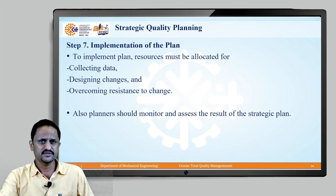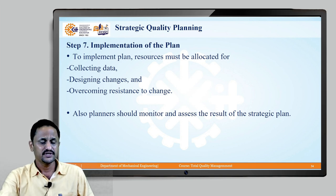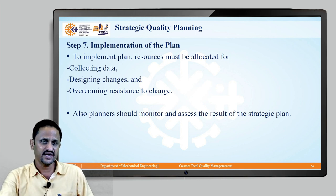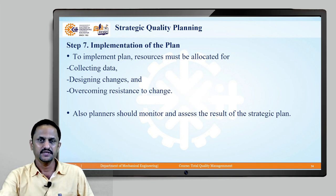The last step of strategic quality planning is implementation of the plan. Whatever plan you have developed, you have to implement it. For that, you have to collect the data, design the changes, and whenever you want to have any change in the organization, you will always face resistance to such changes. Your prime responsibility is to find a way to overcome this resistance. At last, planners should always monitor and assess the results of these strategic plans, so that the strategic plan can be effectively implemented.